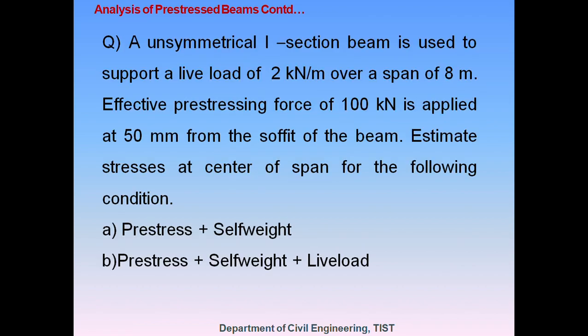The next question: an asymmetrical I-section beam is used to support a live load of 2 kN/m over a span of 8 m. An effective pre-stressing force of 100 kN is applied at 50 mm from the soffit of the beam. Estimate the stresses at the center of span for: (1) pre-stress plus self-weight, and (2) pre-stress plus self-weight plus live load. The key difference here is that the cross-section is an asymmetrical I-section.